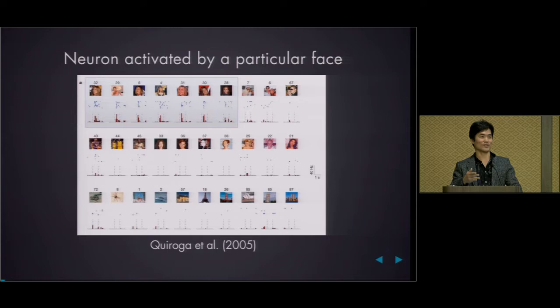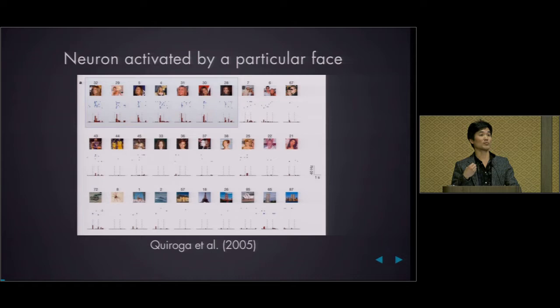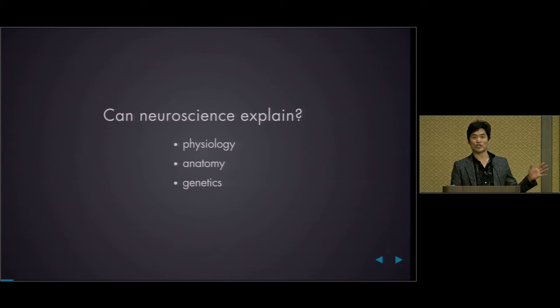It doesn't really prove that this neuron responds only to Jennifer Aniston because the ensemble of stimuli was not large enough — but you can say this is a very selective neuron. With single neuron recordings, you can describe the fact that this neuron responds to Jennifer Aniston, but explaining how this neuron comes to be selected for Jennifer Aniston is what neuroscience has so far failed to do. We have many theories, some embodied in convolutional nets used by machine learning, but neuroscientists have not been able to explain.